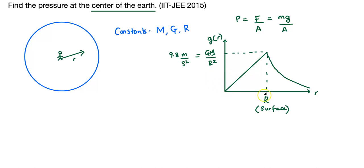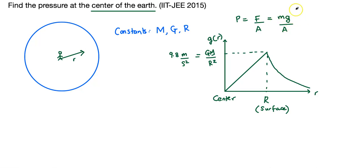At r = 0, which is the center of the Earth, g is zero. So the entire numerator of force is zero, and it doesn't matter what the area is. So the pressure at the center, let's call that Pc, equals zero. But I encourage you to pause for a second and think about whether what we did is correct.